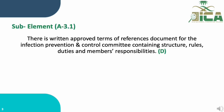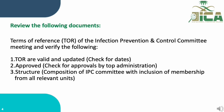A.3.1: There is a written, approved Term of Reference document for the Infection Prevention and Control Committee containing structure, roles, duties, and members' responsibilities, and is evaluated by documents. Review the Term of Reference of the IPC Committee and verify the following: Number 1 — Term of Reference are valid and updated. Number 2 — Approved by top administration. Number 3 — Structure and composition of the IPC Committee with inclusion of membership from all relevant units.